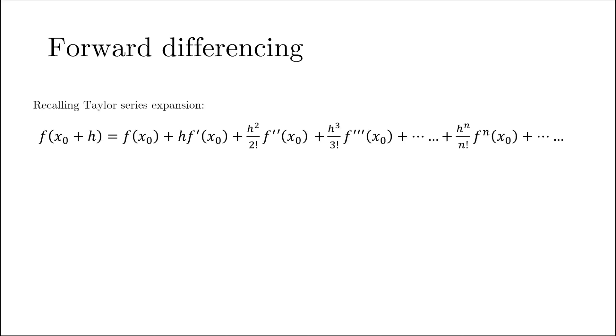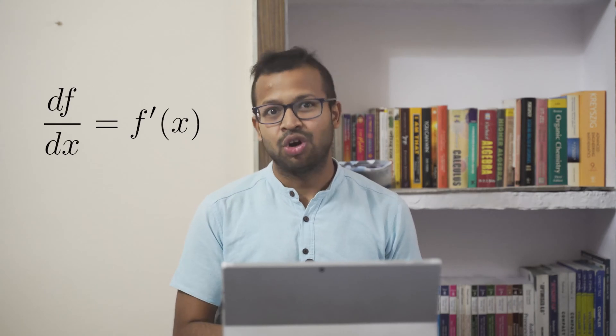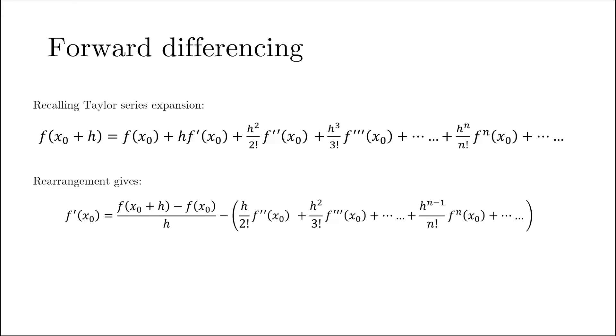Let's start with the forward differencing method. Recall that in the last lecture, we wrote the Taylor series expansion of a function f in a particular fashion. When we talk of the finite differencing method, our objective is to get the derivatives of this function. We are focusing on the first derivative, represented as f prime or f dash. It's easy to see that we can rearrange this equation and write the first derivative in a particular fashion.